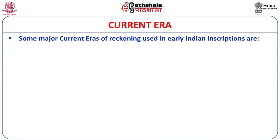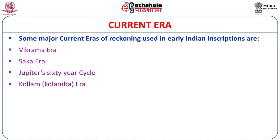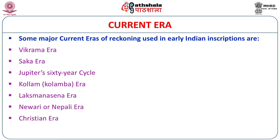Some major current eras of reckoning used in early Indian inscriptions are the Vikrama era and Shaka era — the two most famous and well-known systems of reckoning — besides the Jupiter 60-year cycle, the Kollam era, the Lakshmana Sena Sambath, the Nevari Sambath, as well as the modern Christian era, which is the only era recognized throughout the world in modern days.